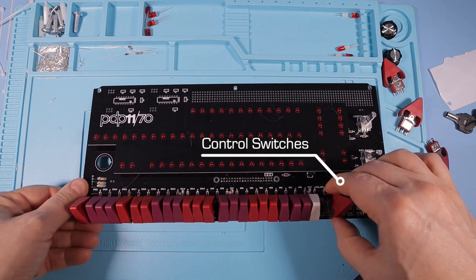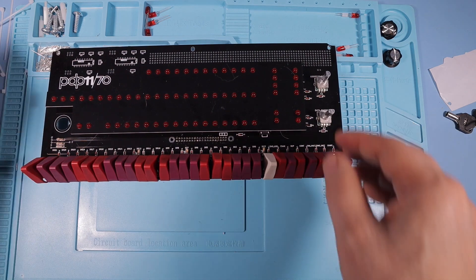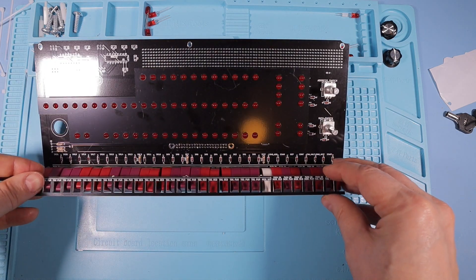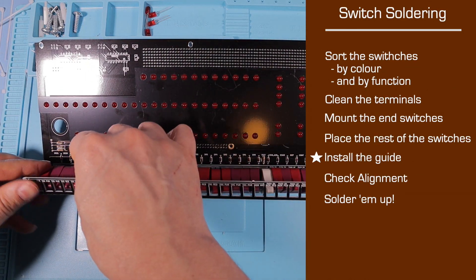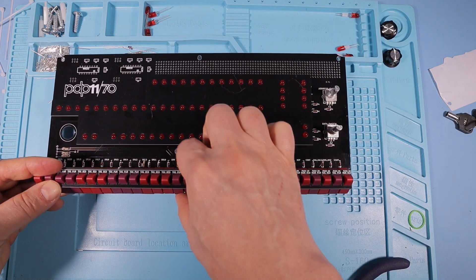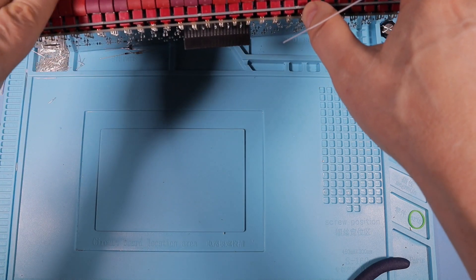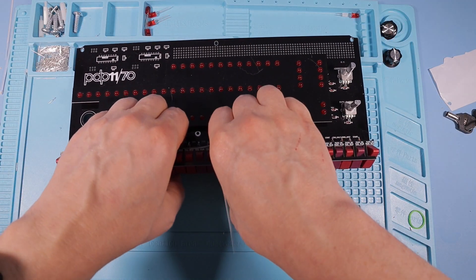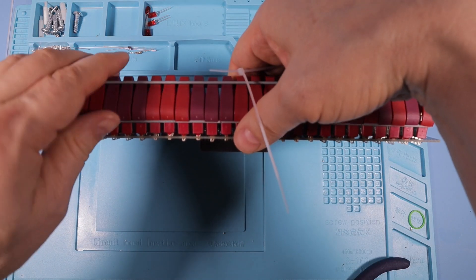Once we have all the slots and the open end positions populated, it's time to use the second guide template. This one goes over the tips of the switches to align them. Once it's in place on top, you snug the bottom guide back up as far as it will go. Be careful not to dislodge the switches.